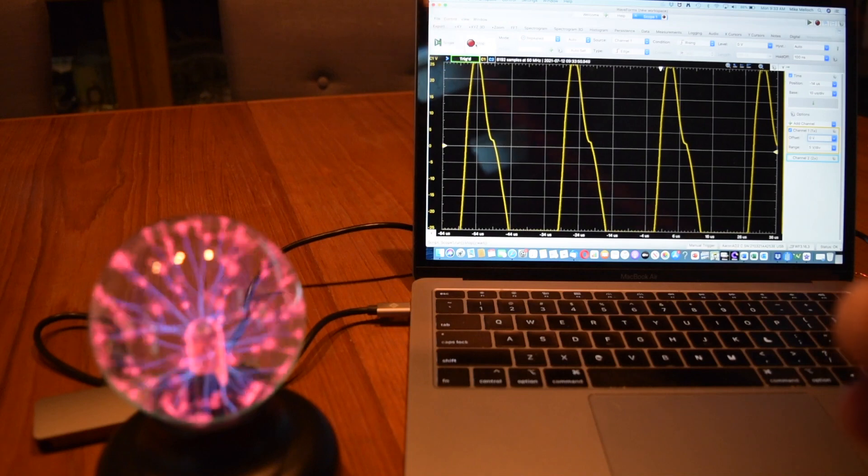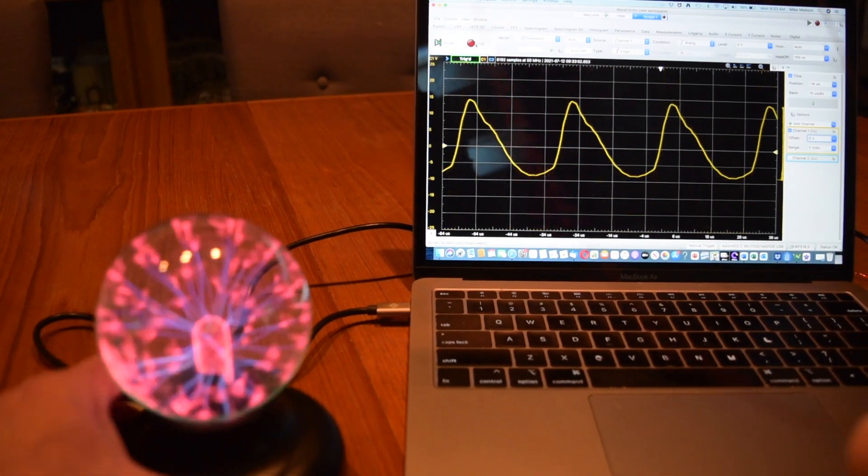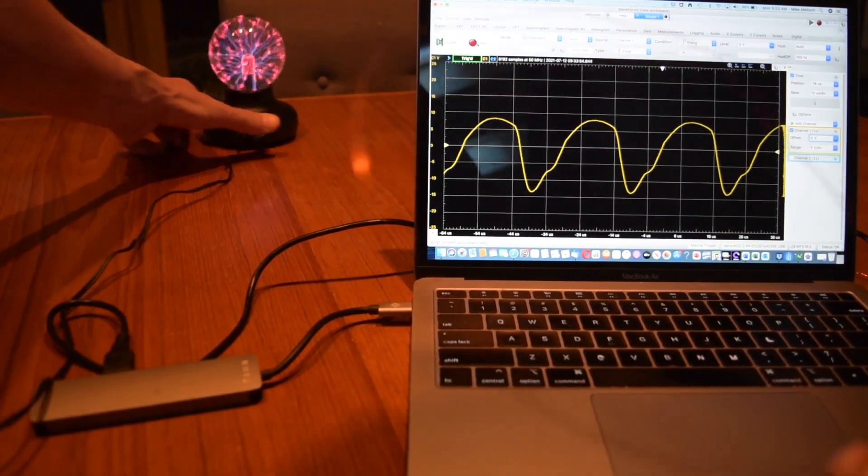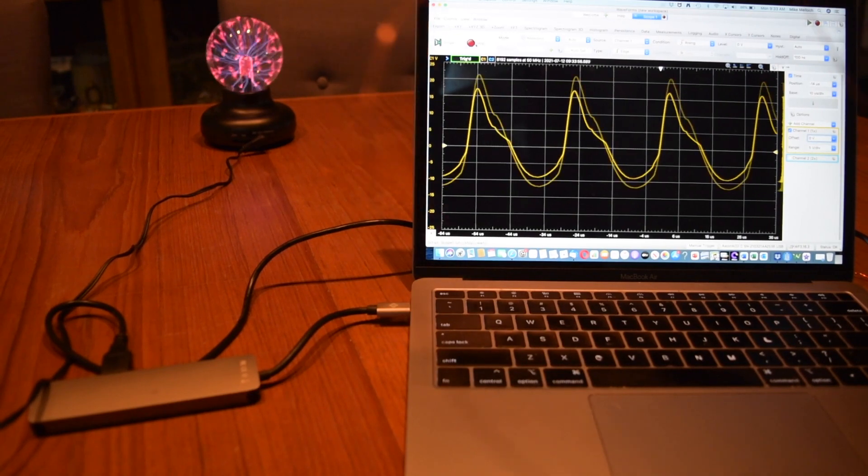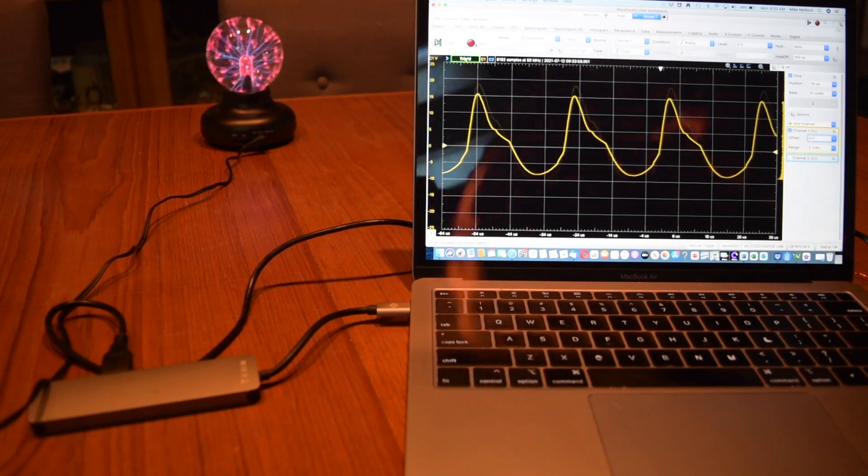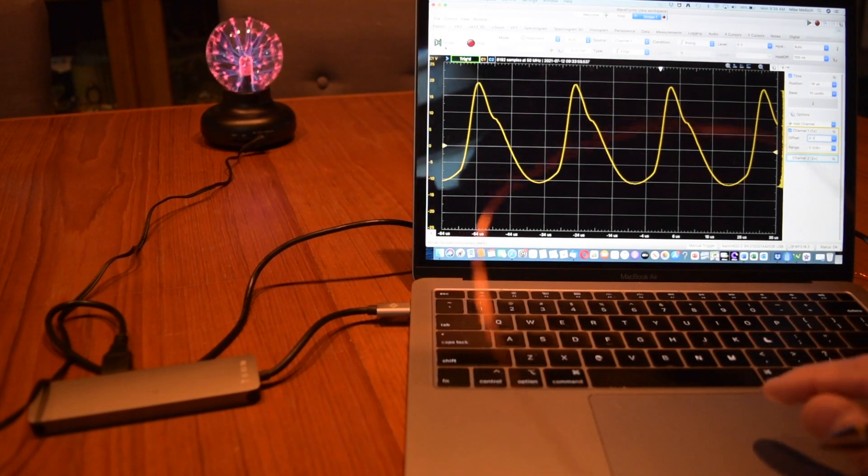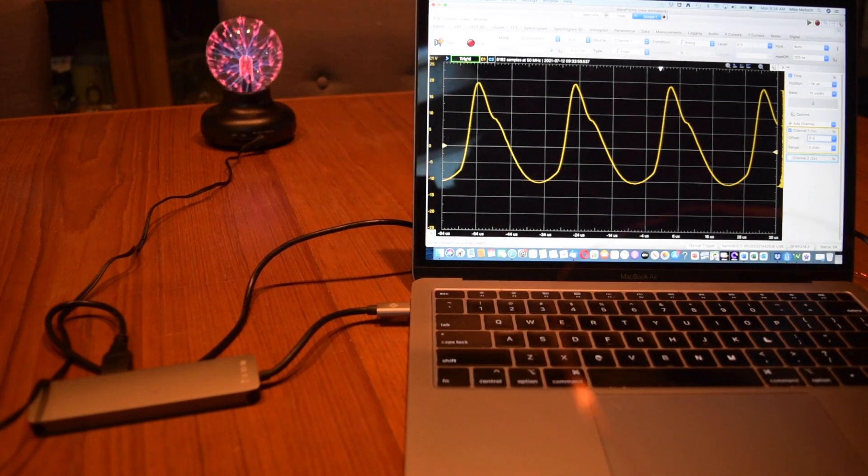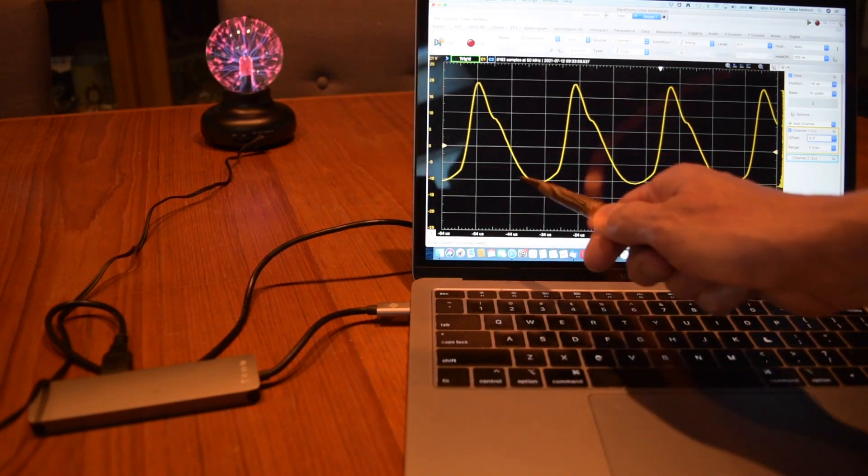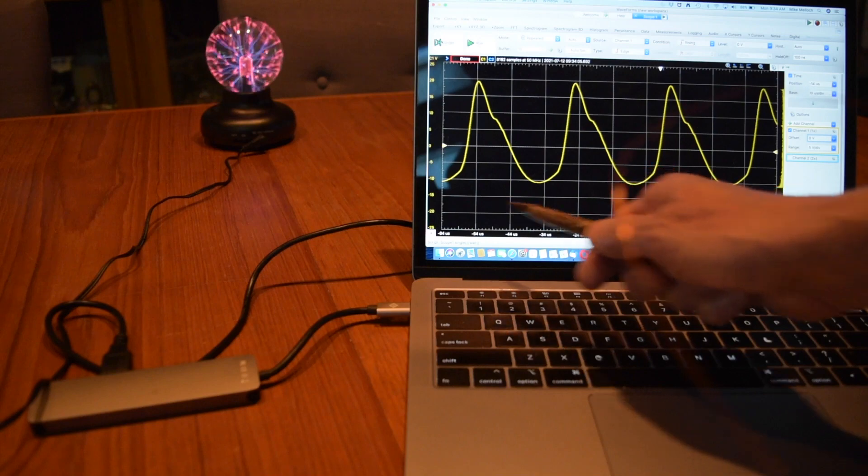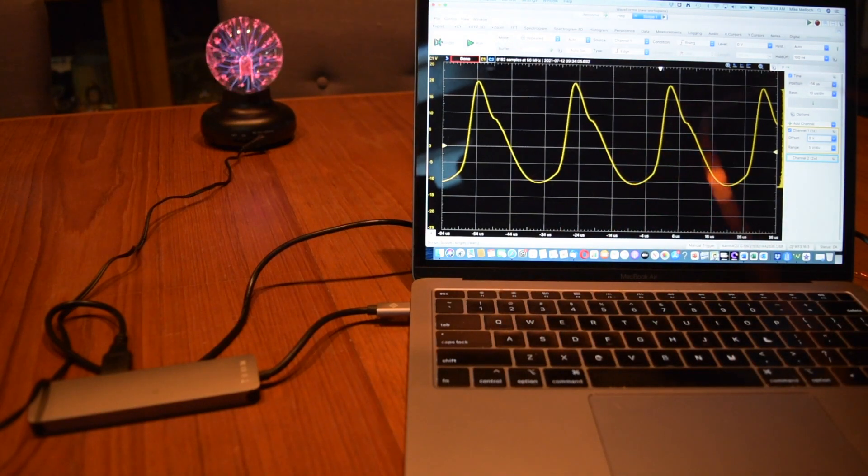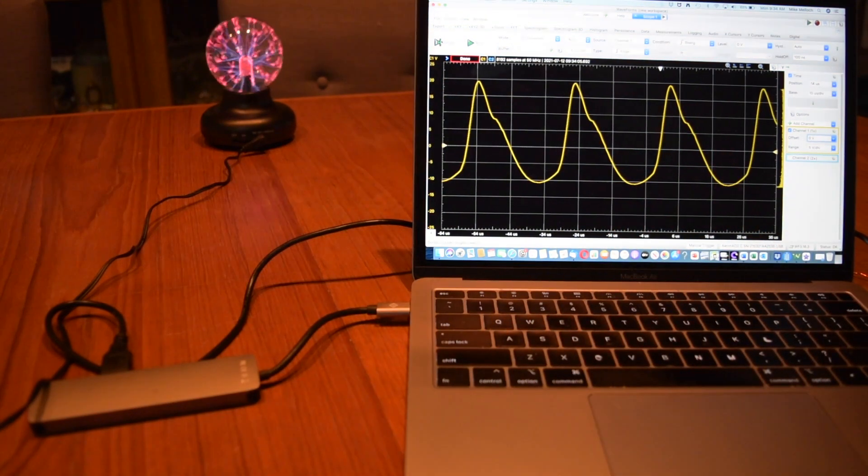Let me move the plasma globe further away and capture the signal. The period is about three divisions, which is 30 microseconds. So the electric field that the plasma globe is putting out has a period of 30 microseconds.